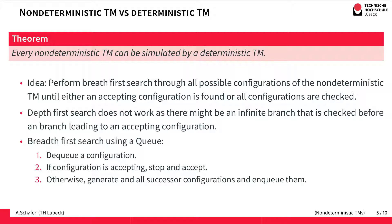This simulation must be done using a breadth-first search, because a depth-first search might go into a branch with an infinite loop while another branch actually has an accepting configuration. Even with breadth-first search the simulation might not terminate, because a branch could be infinite with no accepting configuration. But the important part is that if there is an accepting configuration, we will find it. The search uses a queue.